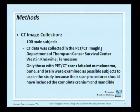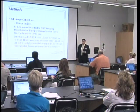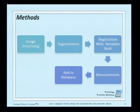For methods, we did CT image collection of 100 male subjects. Data was collected in the PET-CT imaging department of Thompson Cancer Survival Center, West Knoxville. We used only PET-CT scans labeled as melanoma. Bone and brain scans were examined as possible subjects because their scan procedures should have included the complete cranium and mandible. Some procedures like ENT scans only covered a partial skull and could not be used. In this case, the scan covered the complete skull.